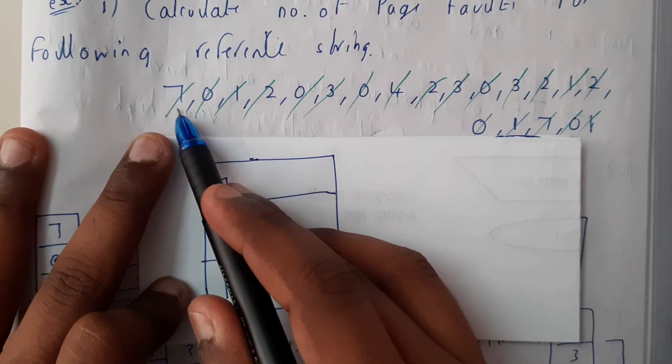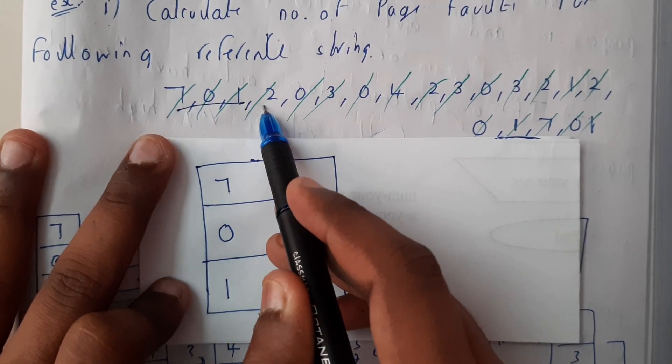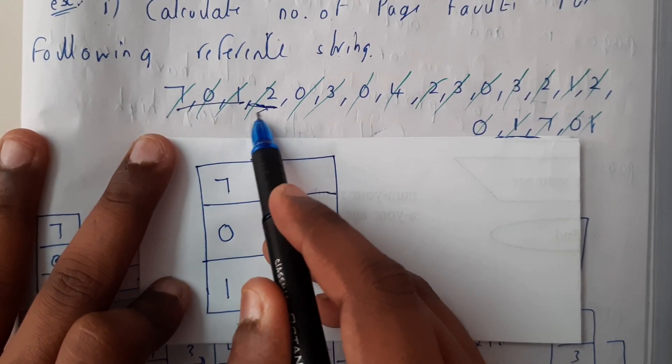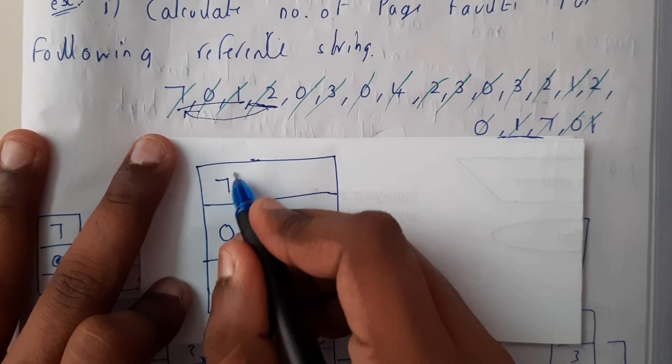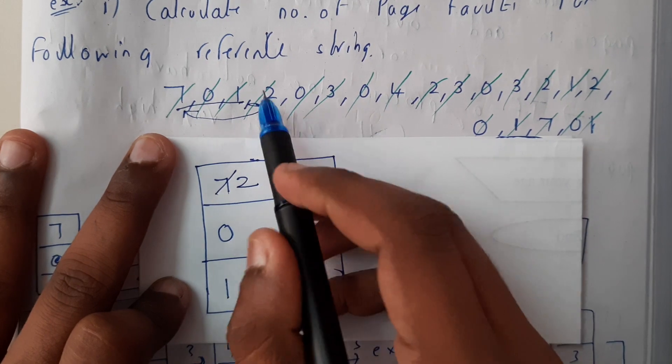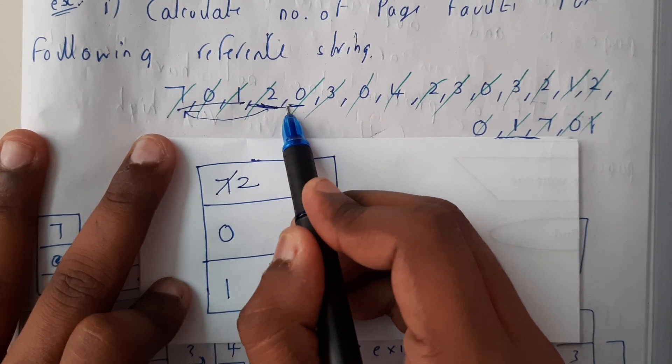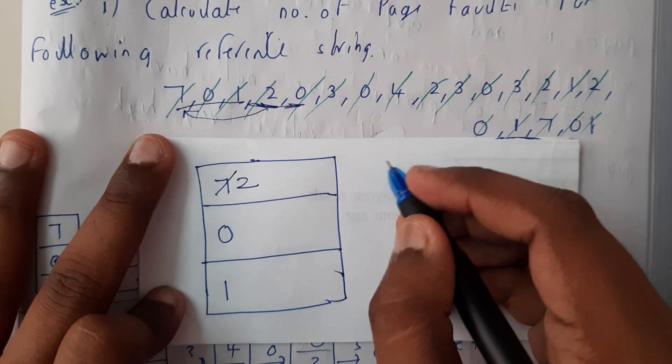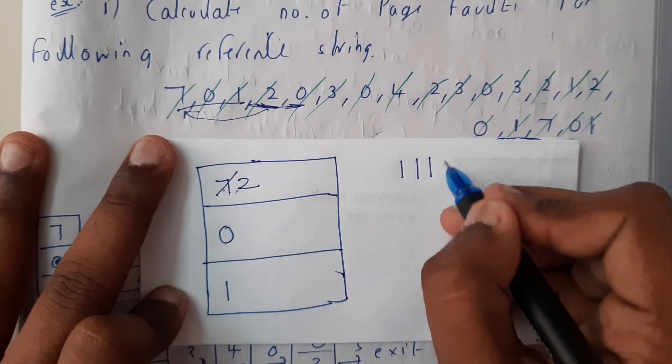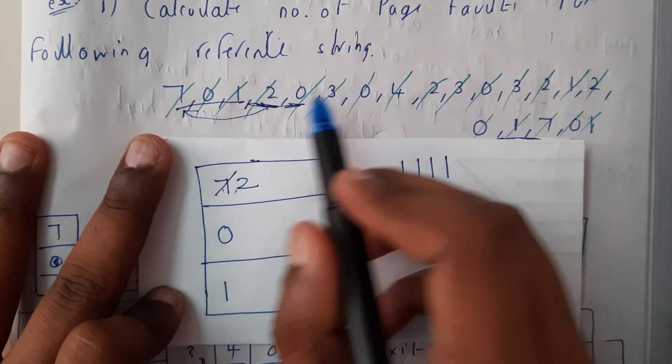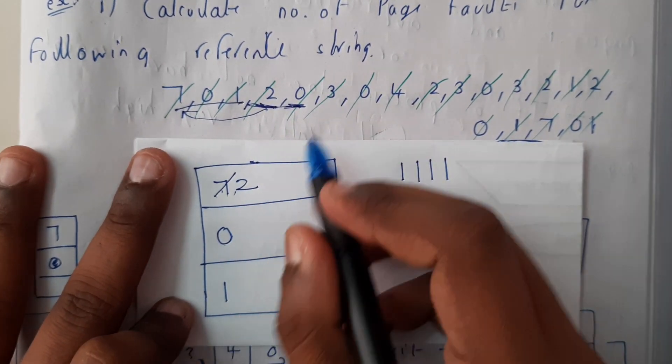Now we are done with these three. Now we need to replace two, so what is the last thing here? It is nothing but the seven. So now replace seven with two. The next thing is zero. Zero is already existing, so now we've got three faults and now this two will be the fourth fault.